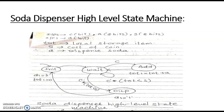This is the high level state machine for the soda dispenser. The first is the initial state, in which D is set to 0 — D becomes 1 only when soda is dispensed. In the initial state, D equals 0. Also, the local reference variable TOT is initialized to 0 at the start.